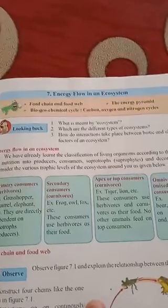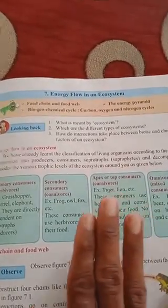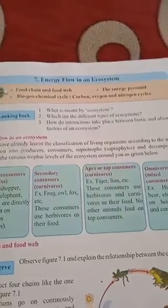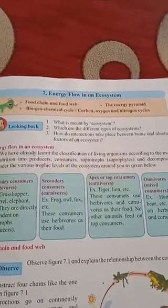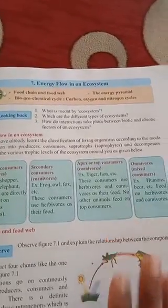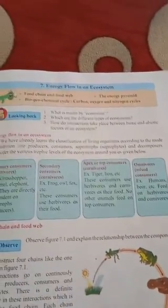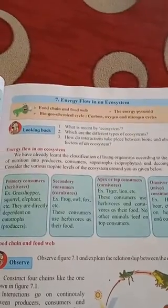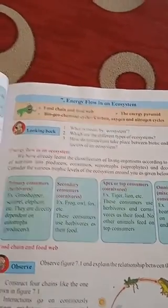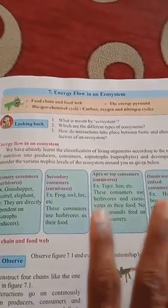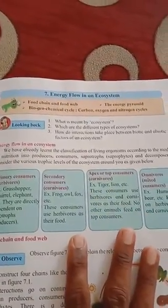Today you are going to read this chapter very carefully. Tomorrow we will go deeper with diagrammatic explanations, covering different ecosystems, food chains, food webs, and energy. In short, we will do a summary of chapter number 7.